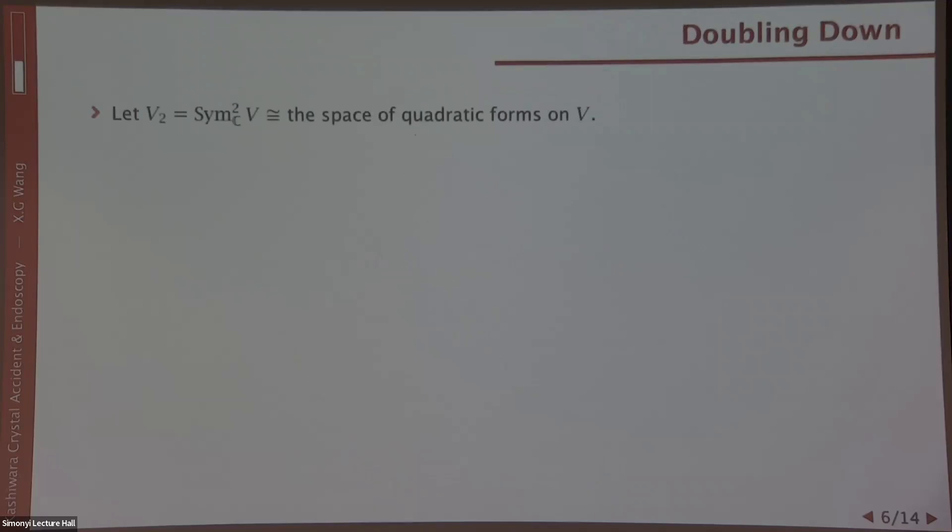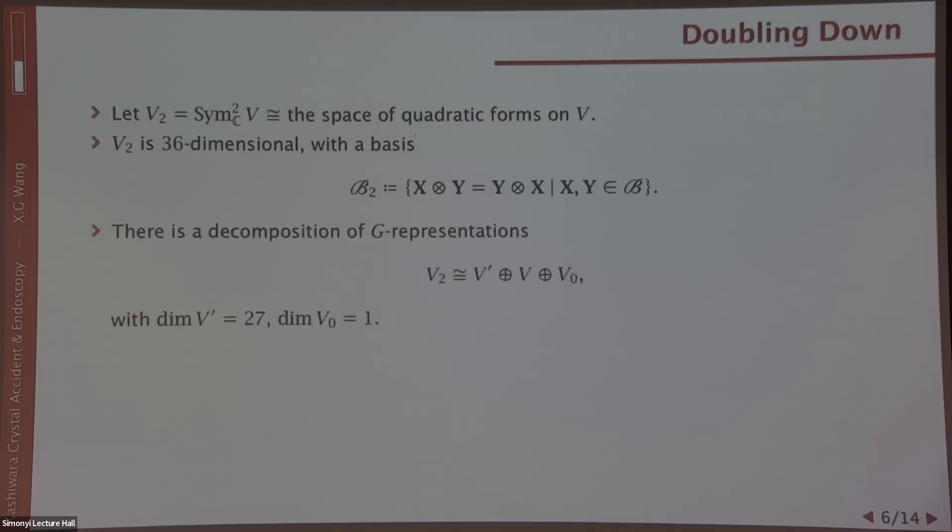Let's look at a slightly more complicated example. Let's take V2 to be symmetric square of V, which happens to be isomorphic to the space of quadratic forms on V. With the basis script B, we can naturally induce a basis of V2. As G representation, V2 also decomposes into three irreducible ones: there is a trivial representation V0, a copy of the original representation V inside it, and another one V prime, which is 27 dimensional, that is new.